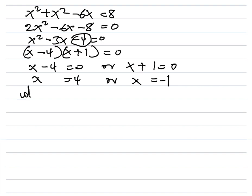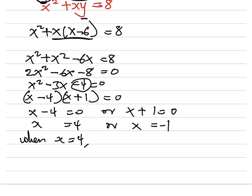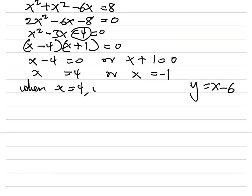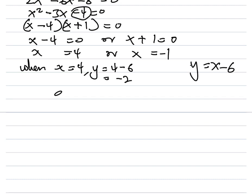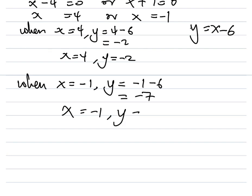We need to find the y values. Since we have y = x − 6, when x = 4, y = 4 − 6 = −2. So when x = 4, y = −2. When x = −1, y = −1 − 6 = −7. So when x = −1, y = −7.